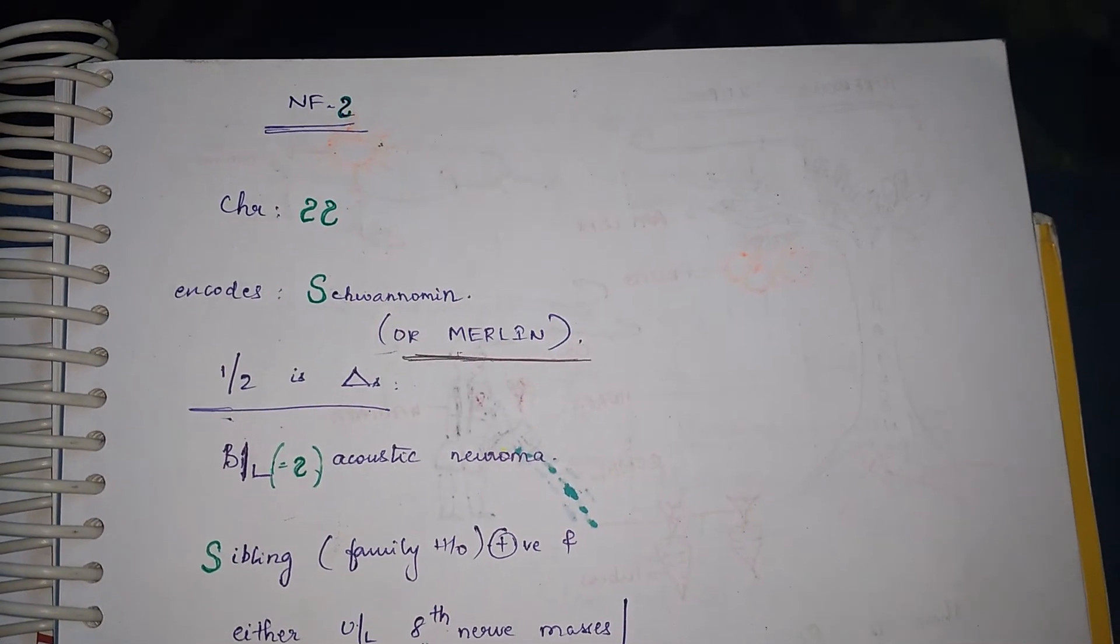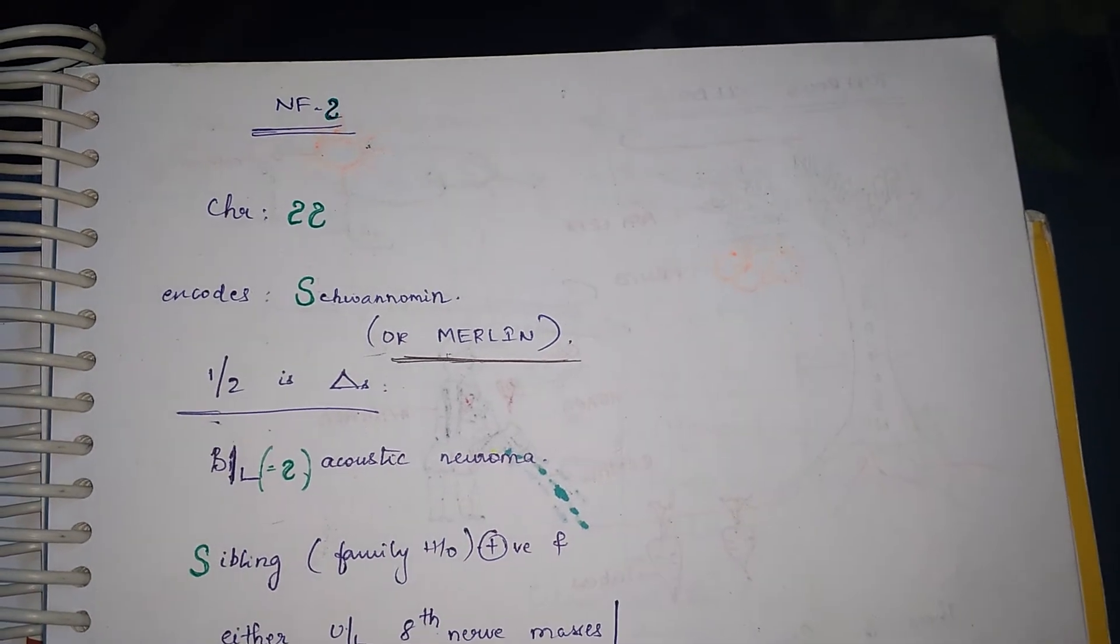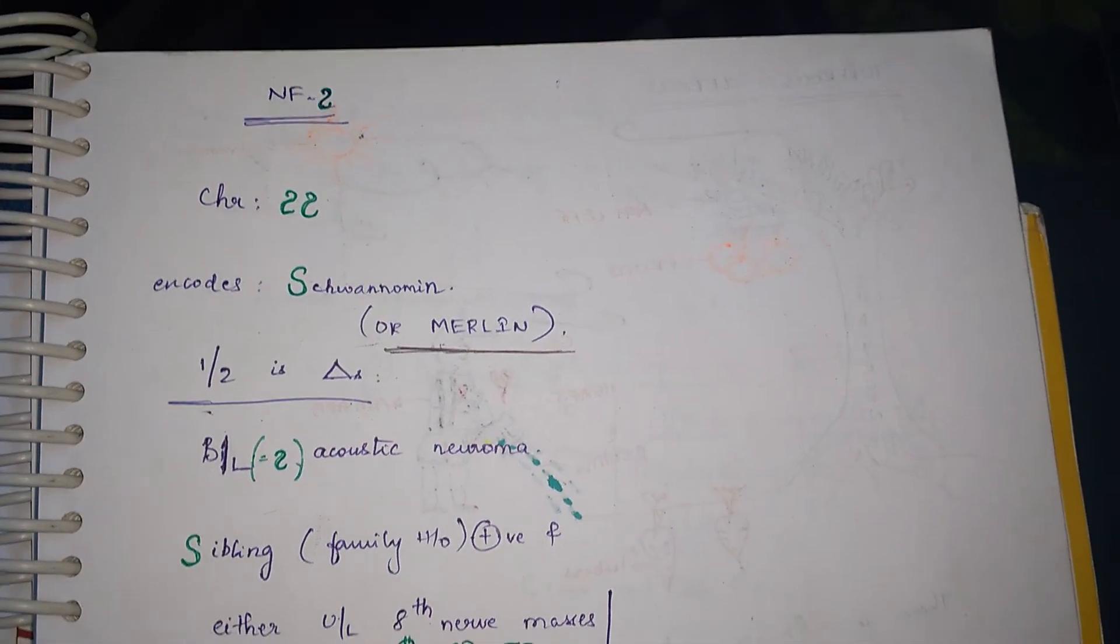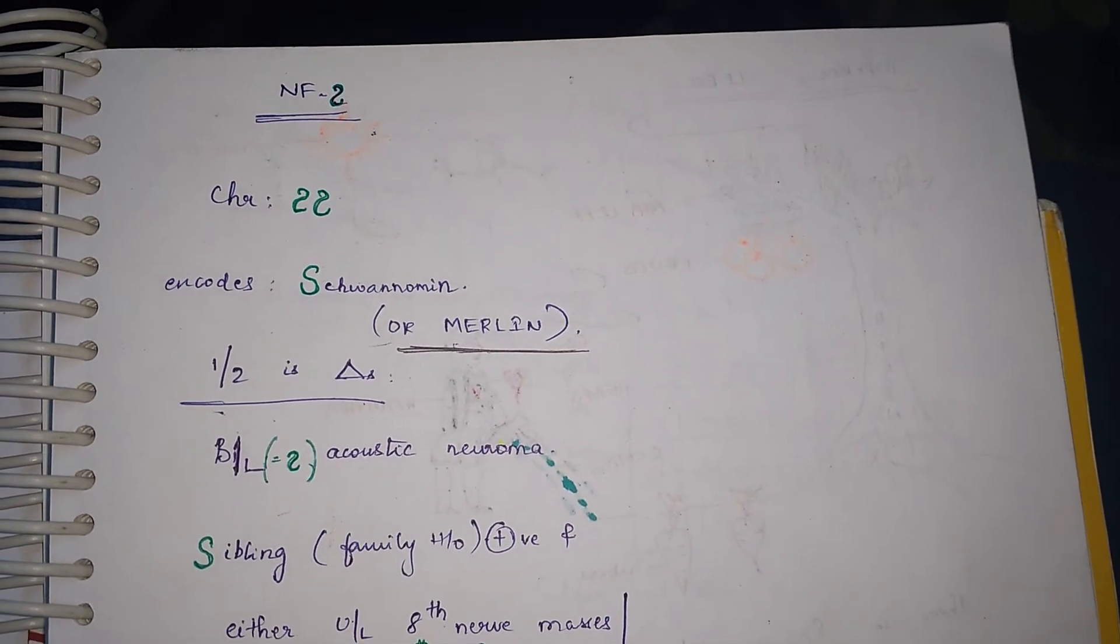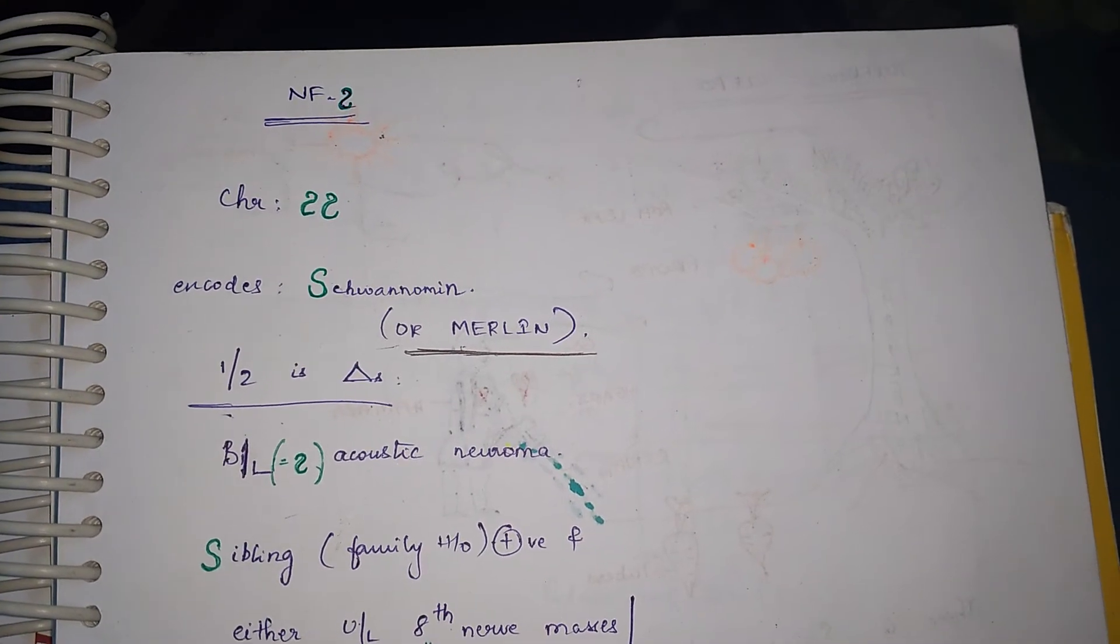And also the other videos of neurocutaneous tumors. So neurofibromatosis 2, our code is in the disease itself, that is 2.